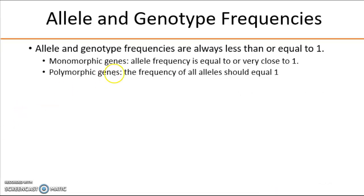When you calculate these frequencies, bear in mind they should always be equal to or a little less than 1, or 100%, because we're talking about all the individuals in a population. If it's monomorphic, that one allele should be equal or very close to 1 — remember, 99%. And if it's polymorphic, all of those alleles together should equal 1 or 100%.